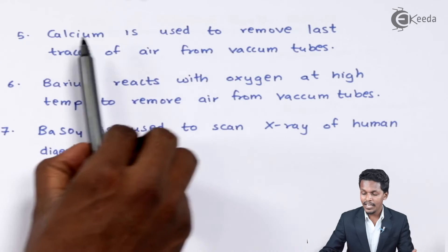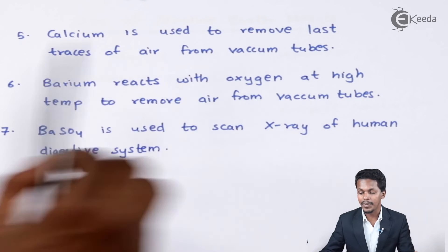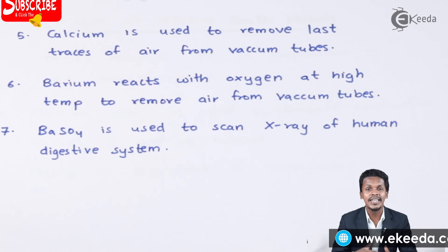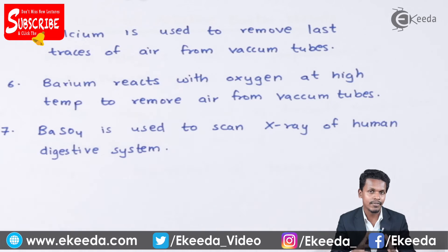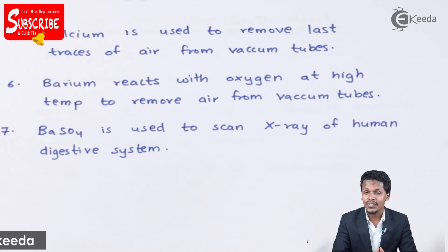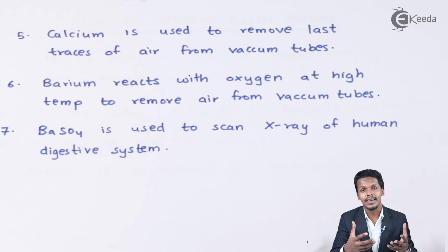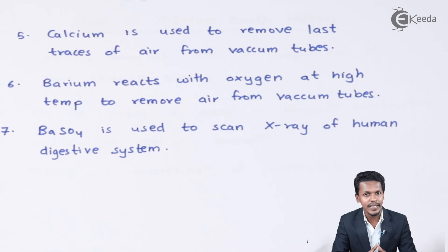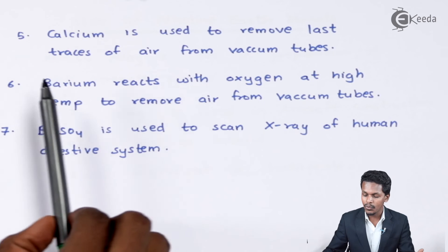Calcium is used to remove the last traces of air from vacuum tubes. Calcium is reactive with oxygen, so when creating a vacuum tube or vacuum chamber where a small amount of air remains, calcium is used to absorb or react with the oxygen, thereby creating a vacuum in the tube. Calcium is thus used to remove traces of oxygen from vacuum tubes.